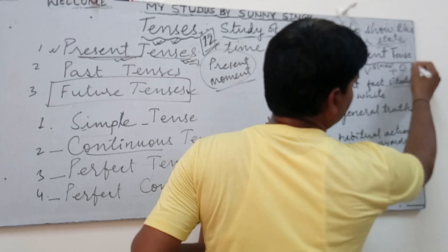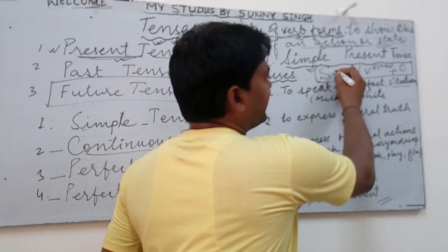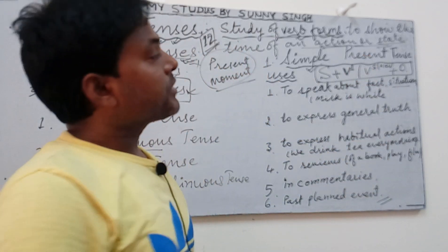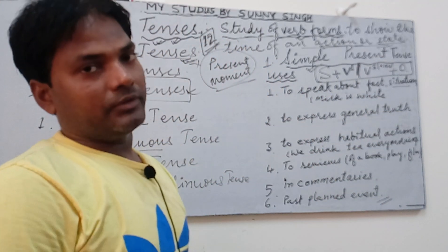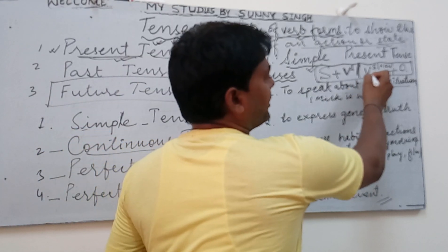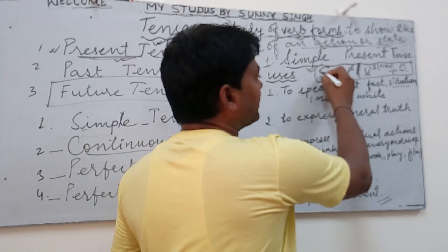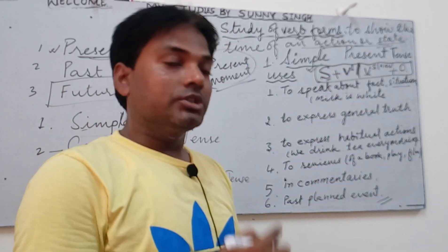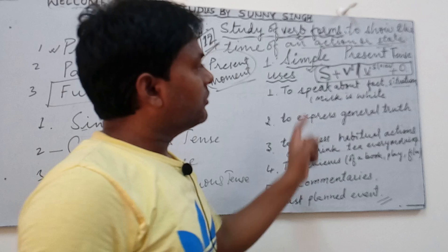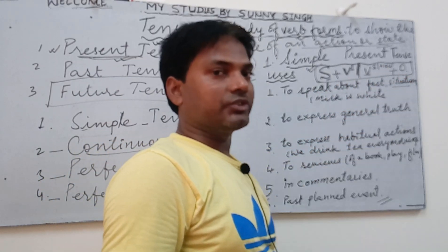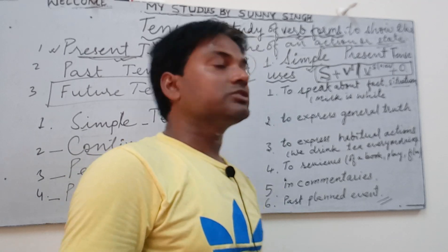In short: simple present tense uses subject and V1, the first form of the verb. In some sentences it takes the fifth form V5. Remember, V5 is used when the subject is third person singular number — he, she, it, a name, or any singular object — and V5 is the S or ES form of verbs. For making negatives and interrogatives, watch my video describing the types of sentences.